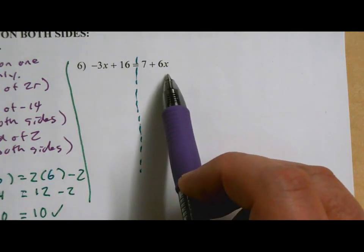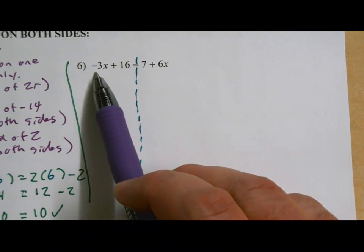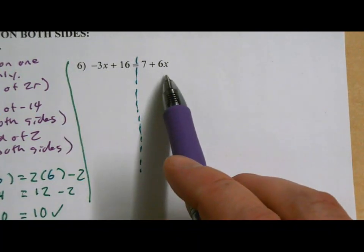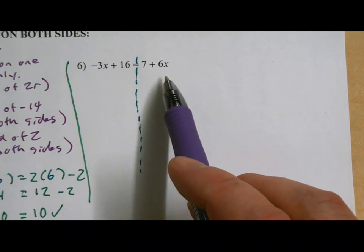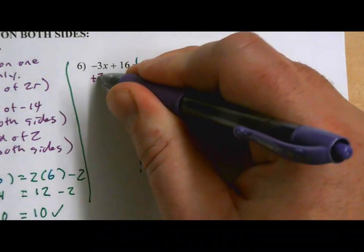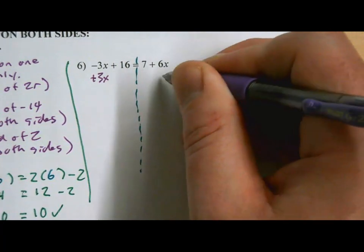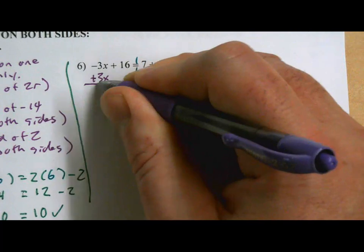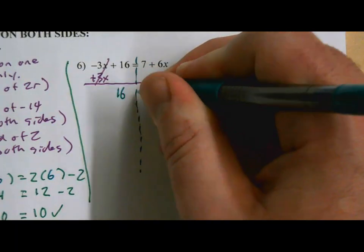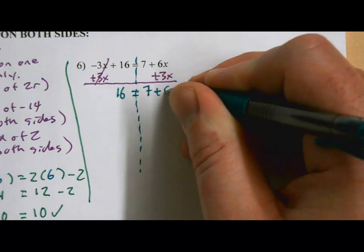There is no wrong answer here, whatever you feel like. I feel like getting rid of the negative because negatives sometimes cause me to make mistakes. So I'm going to get rid of the negative 3x. If you choose to get rid of the 6x, you can get the same answer, but your work will look a little bit different. I'm going with the negative 3x. The opposite of minus 3x is plus 3x, but I need to do it on both sides. Over here, I'm going to make sure it lines up underneath the x term so that it's lined up with its like term. Those will cancel. That leaves us with just a 16. On this side, we have a 7. And then 6 plus 3, that's 9x over here.